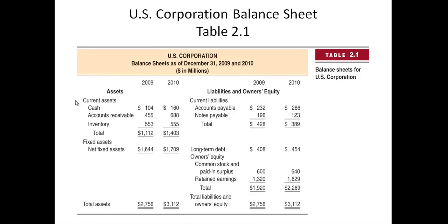The way the balance sheet works is it looks at your assets, your liabilities, and owner's equity. Owner's equity is whatever is left when you take the assets and subtract out what you owe people — the liabilities. That's what belongs to the owners.